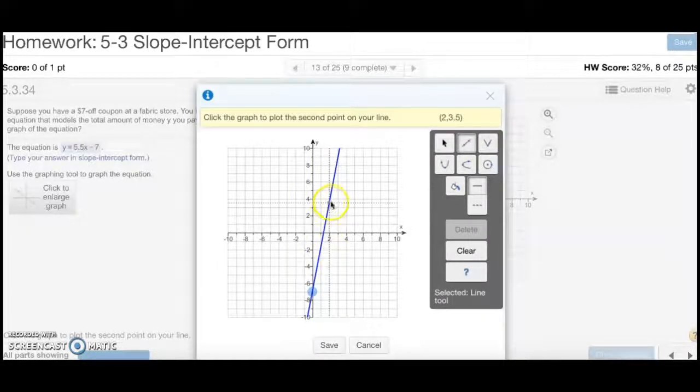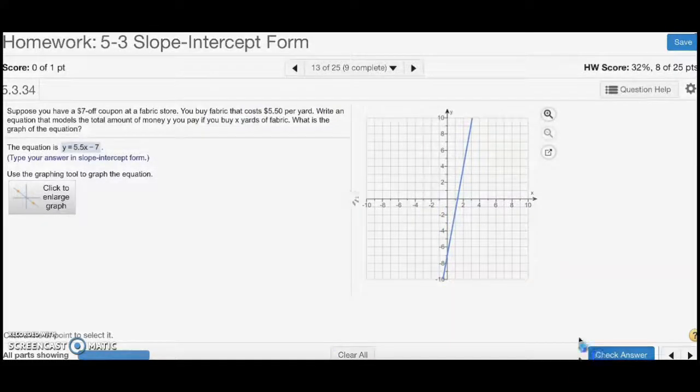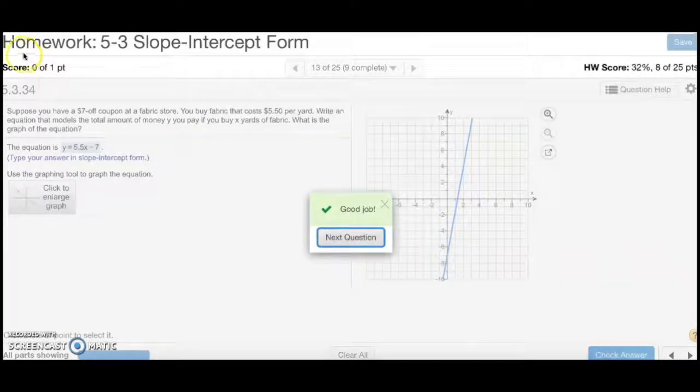So, I can do 2, 4. So, 2 up to 4 for my second point. You can also use your calculator to find a table of values to find the second point. Press save. Check answer. And that's number 13.